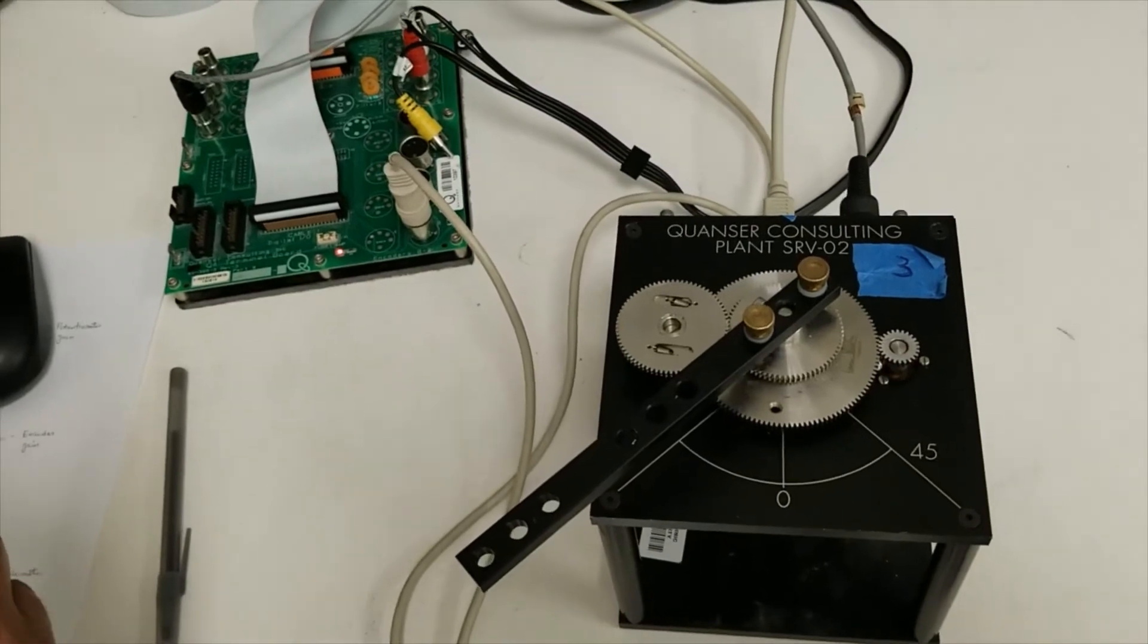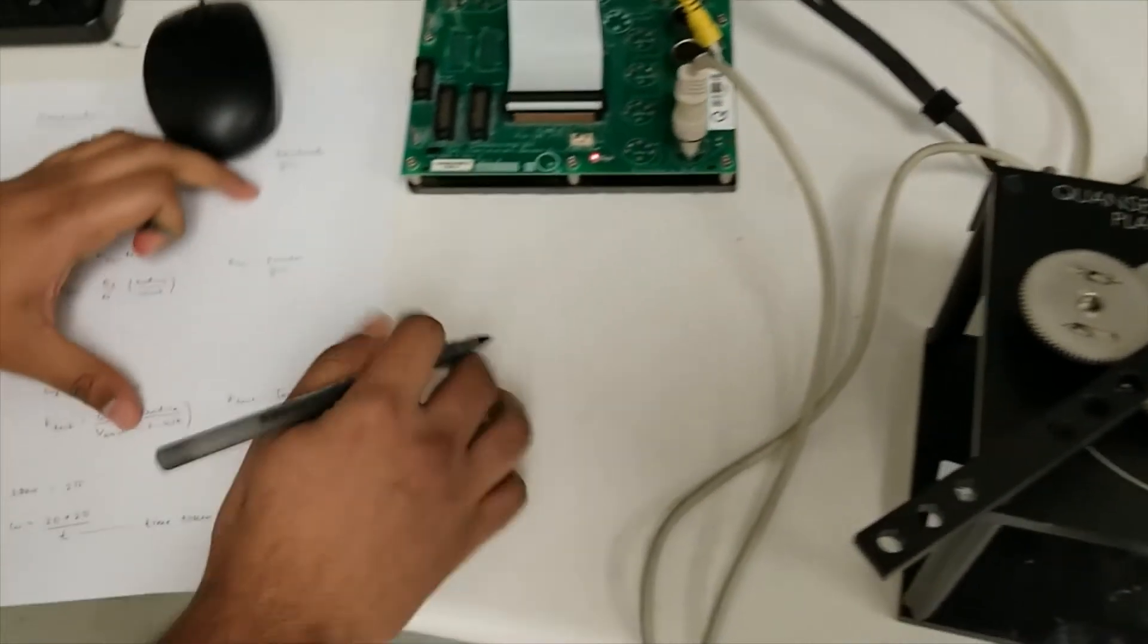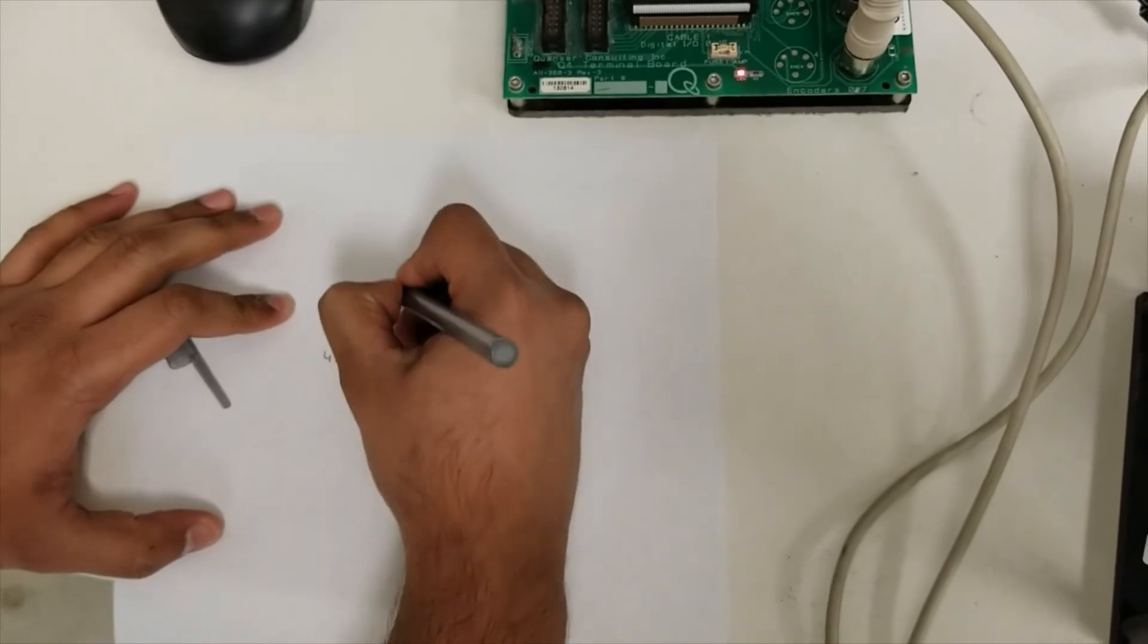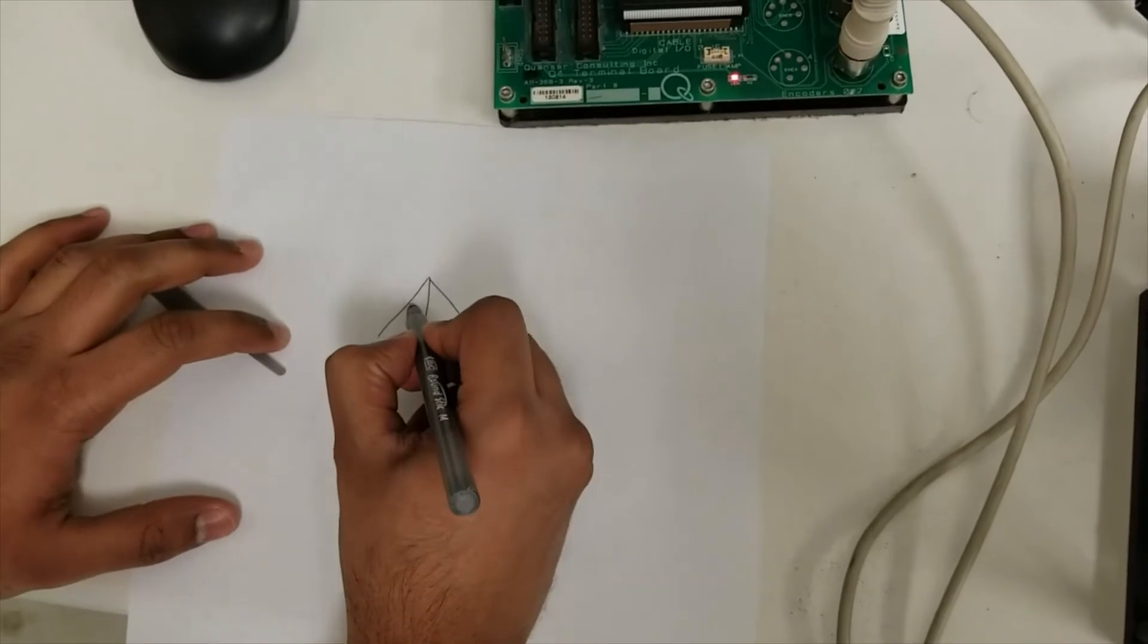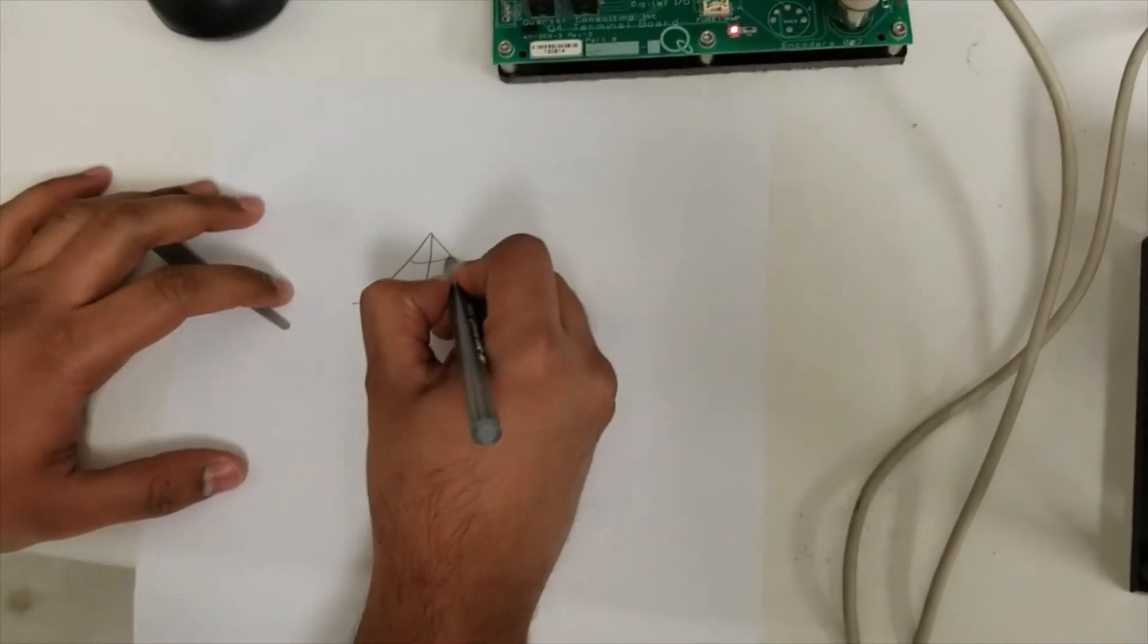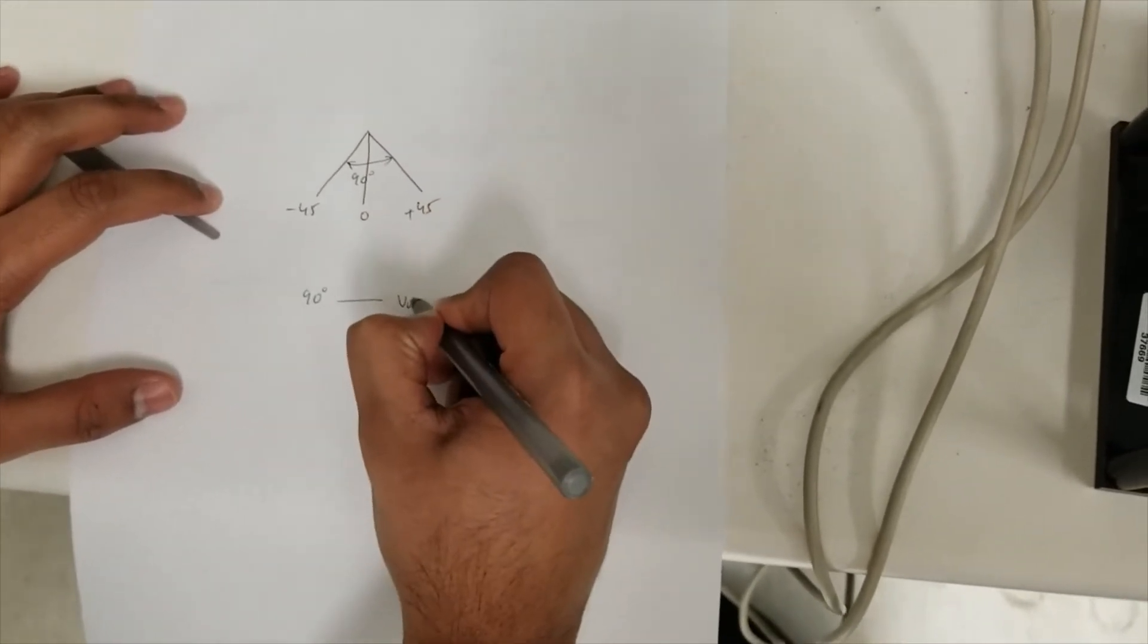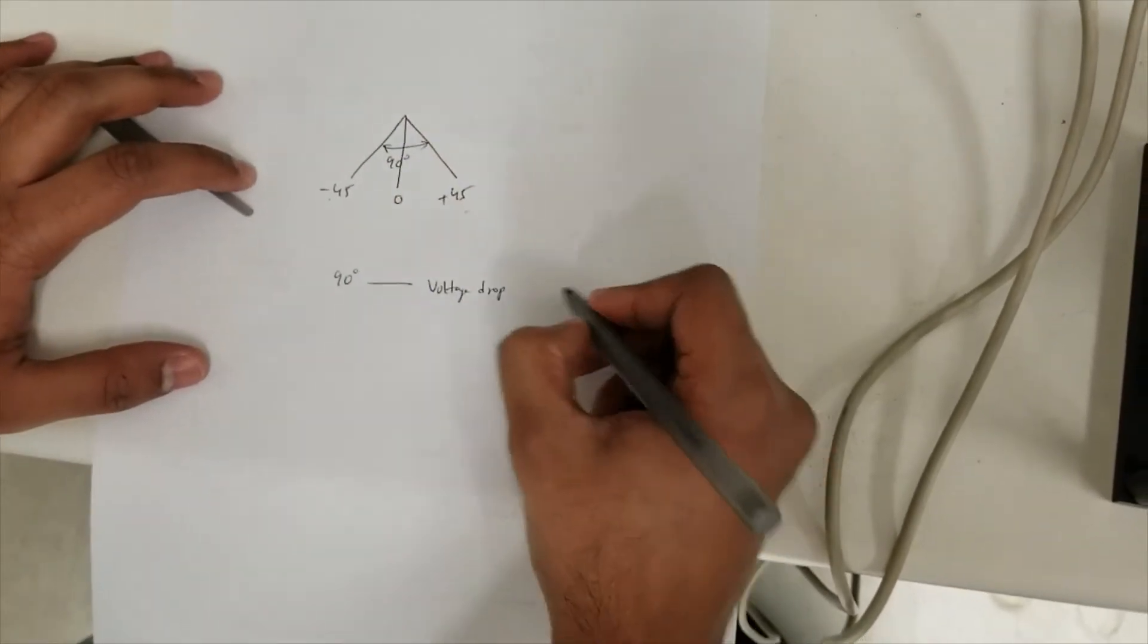You have 45 degrees voltage, you have 0 degrees voltage, and you have plus 45 degrees voltage. Now you can get the... you know that this range is 90 degrees. For 90 degrees, you know the voltage drop, because you know the voltage for minus 45 and plus 45.